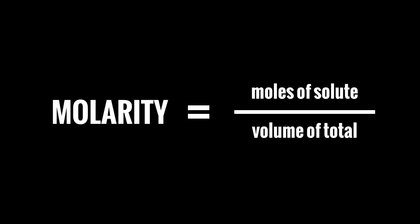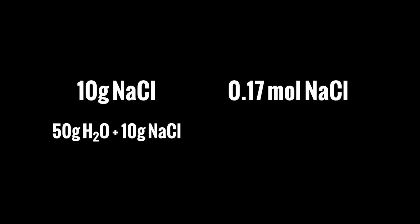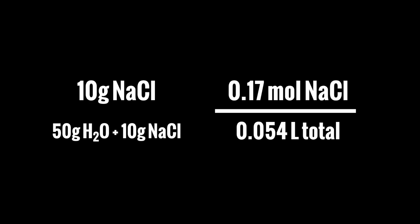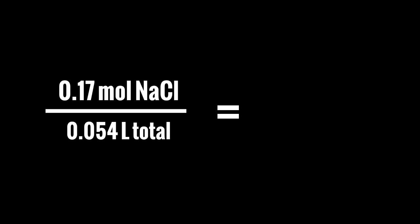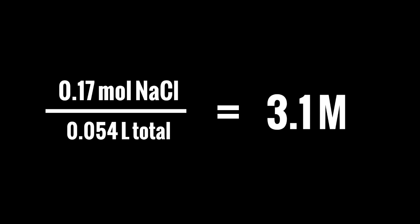The most common way of measuring concentration is molarity. Molarity is equal to the moles of the solute divided by the total volume. Taking the original example, 10 grams of NaCl equals 0.17 moles of NaCl. Our total solution — 50 grams of H₂O and 10 grams of NaCl — has a combined volume of 0.054 liters using the known densities. Remember, with molarity the numerator must always be in moles and the denominator must always be in liters.